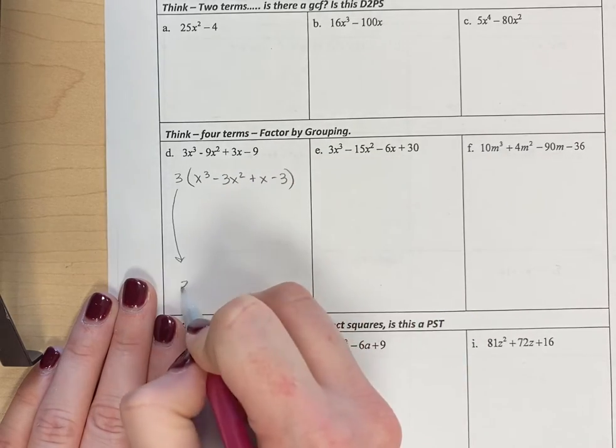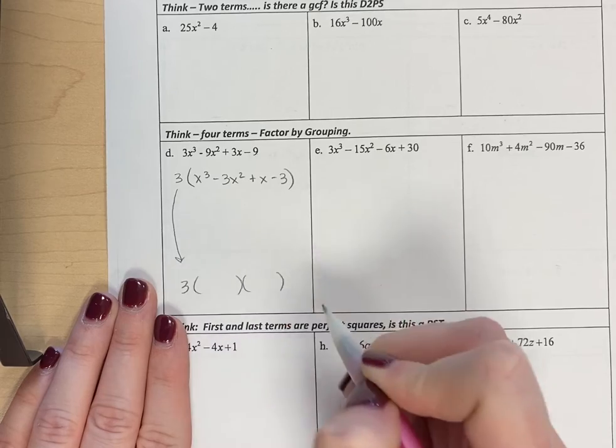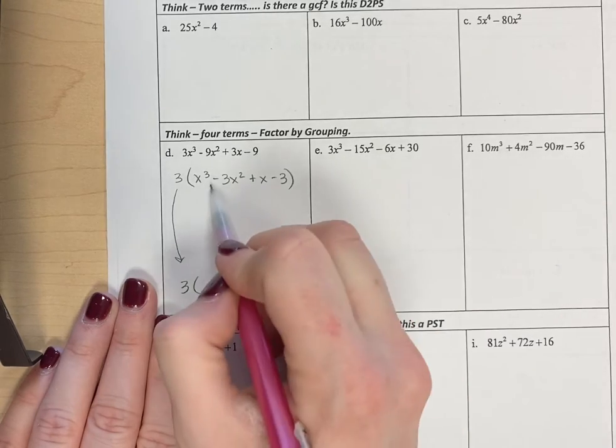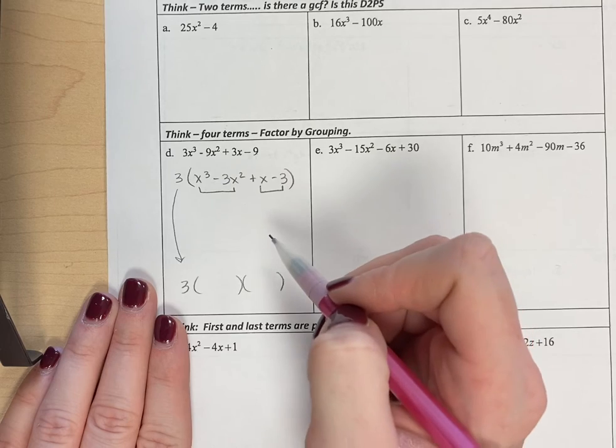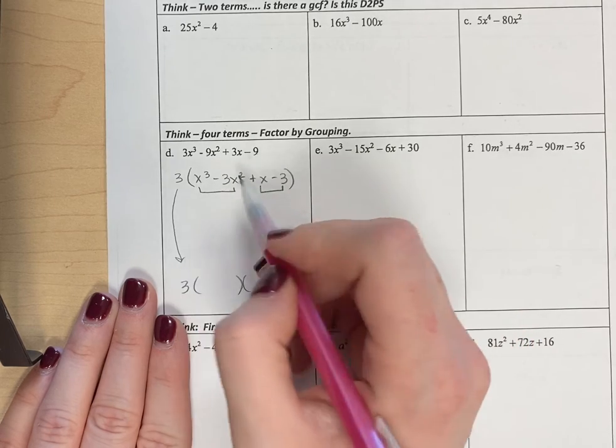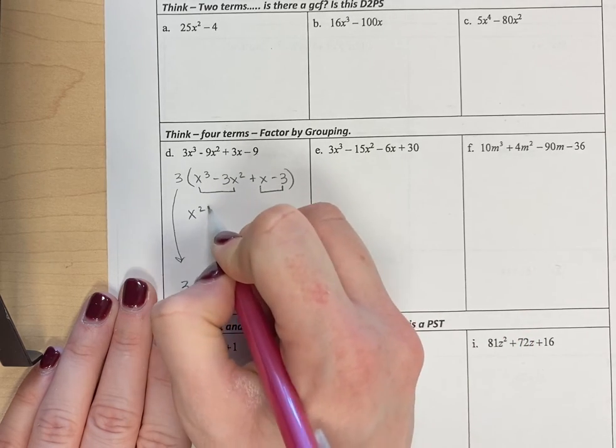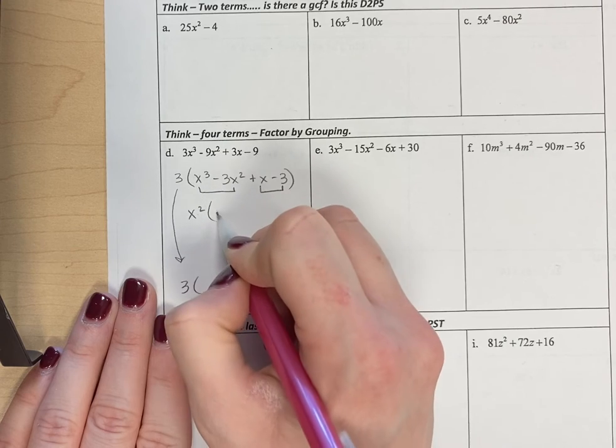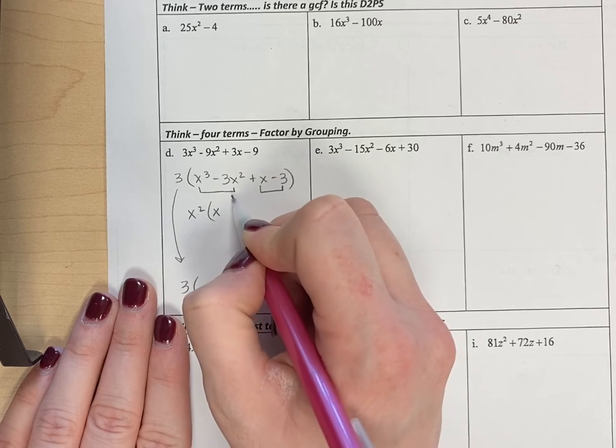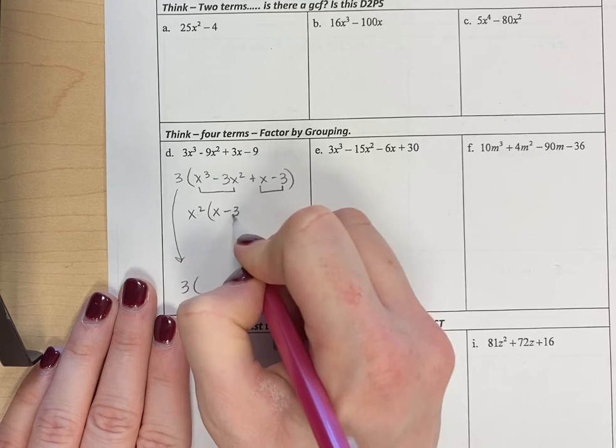I'm going to go ahead and bring that GCF of 3 down and have my two factors ready to go. And then I'm now going to do grouping with this polynomial that I have. So between the two terms, what they have in common is an x squared. x cubed divided by x squared is x. Negative 3x squared divided by x squared is negative 3.